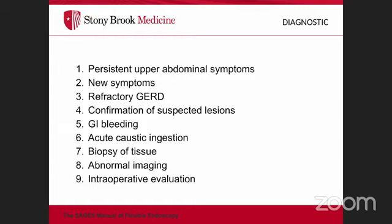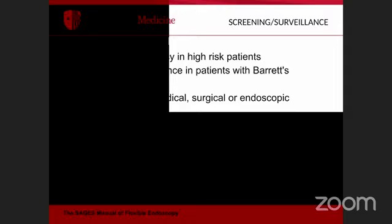New symptoms in patients over age 50, nausea, vomiting, dysphagia, odynophagia, and refractory reflux are diagnostic indications. EGD is also indicated for confirmation of suspected lesions like ulcers, gastritis, or neoplasia, Barrett's esophagus, GI bleeding, acute caustic ingestion, biopsy of known lesions, abnormal imaging findings, and intraoperative evaluation for foregut surgery.